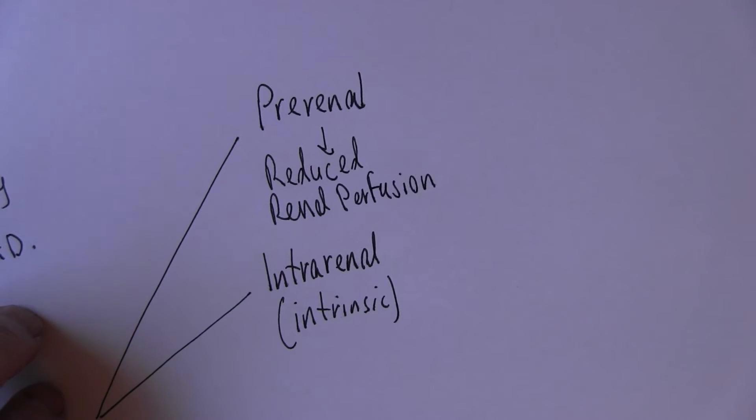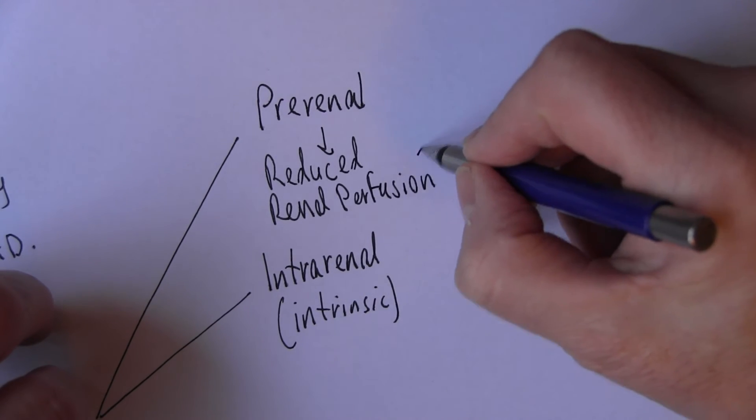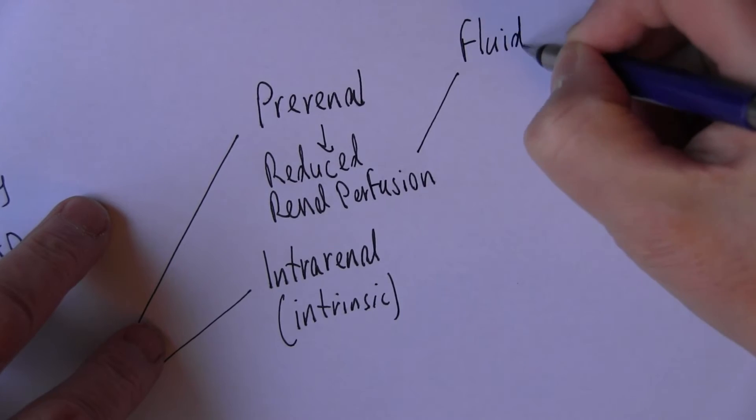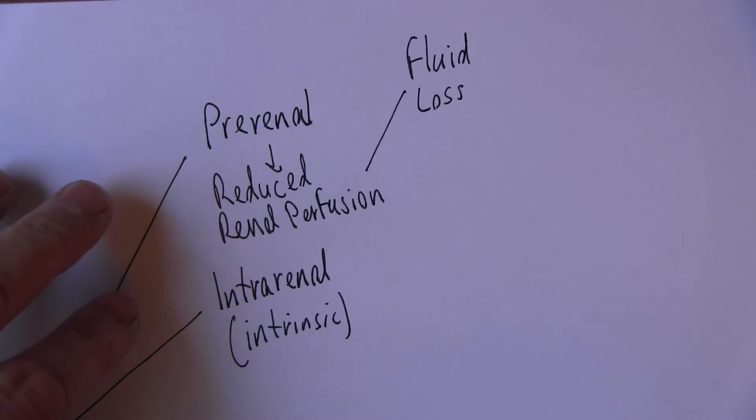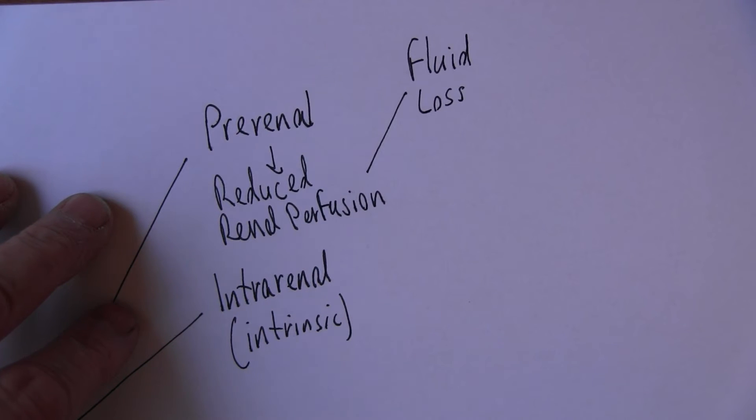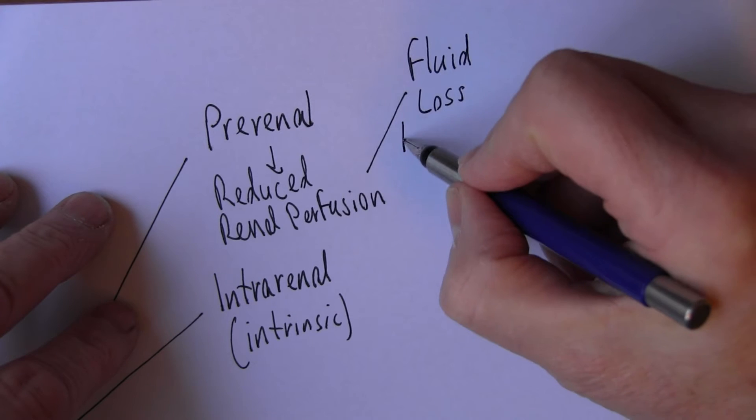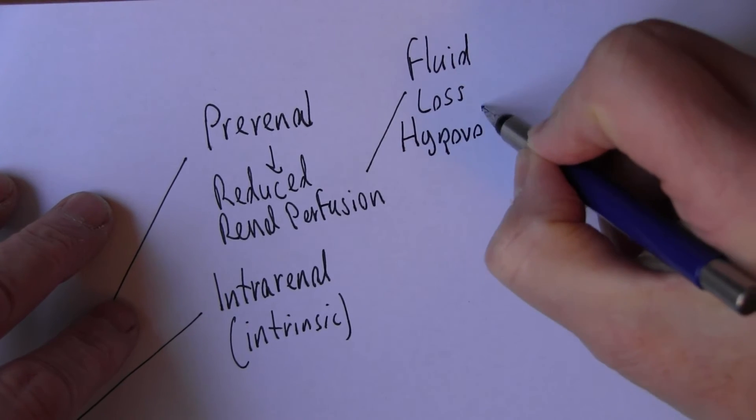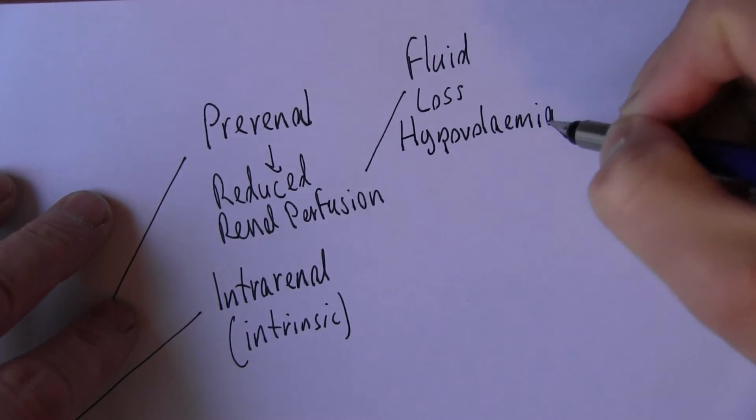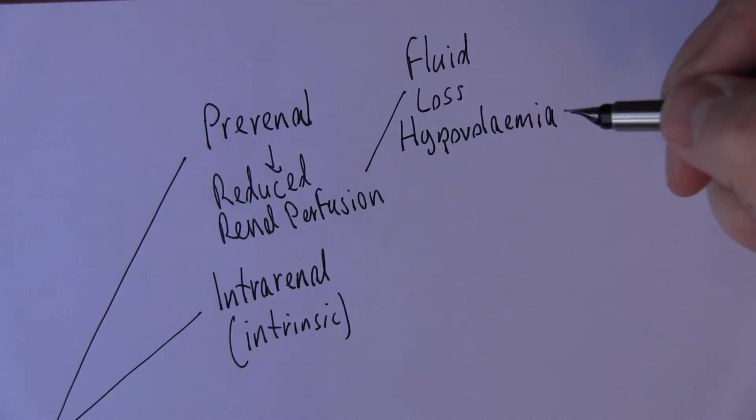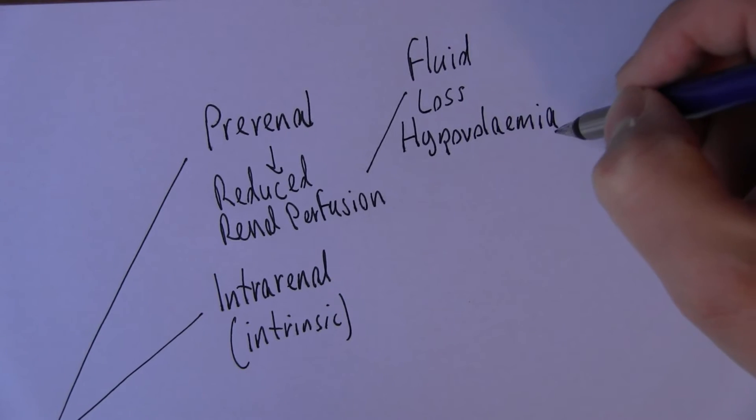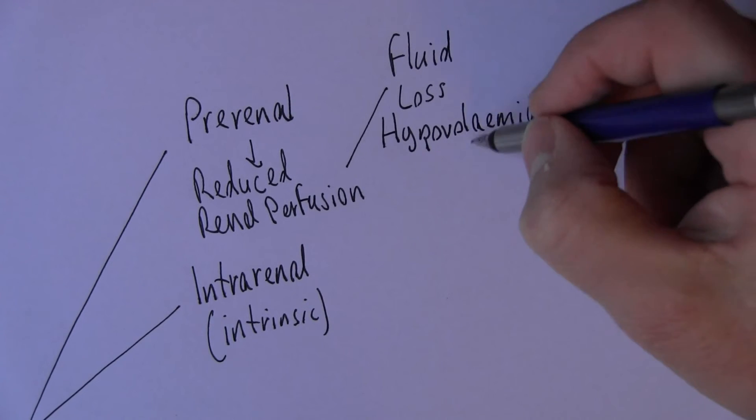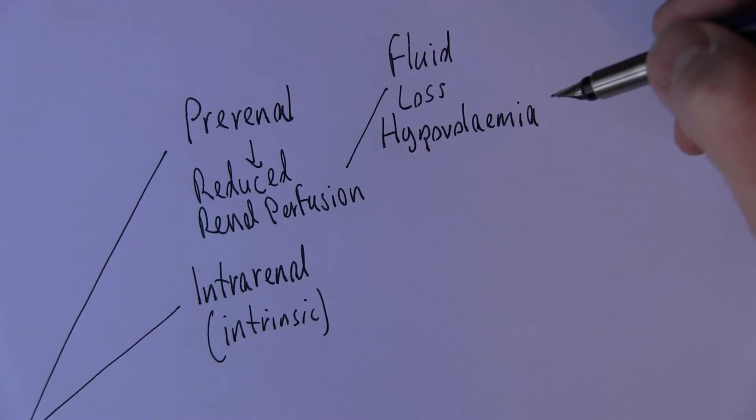So there's reduced renal perfusion. Now why is this? Well there can be reduced renal perfusion because of fluid loss. Fluid loss resulting in low volumes of blood, low volumes of fluid in the body altogether. This would be hypovolemia, hypo low vol emia in the blood. Of course if you're watching in the states you don't put the A, whereas in the UK we put the A.